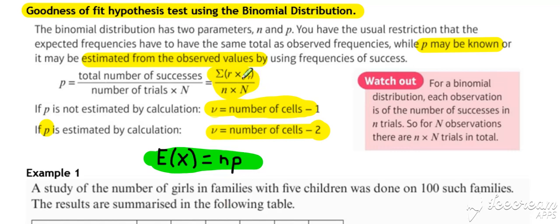That's effectively what this is up here. If you think about the sum of r times f all divided by n, that is your mean of a frequency table. And then you've divided it by n to get what P is equal to. So they're both equivalent to each other. But if you find it easier just to work out the mean and then divide it through by n to get your P value, then you can do it that way.